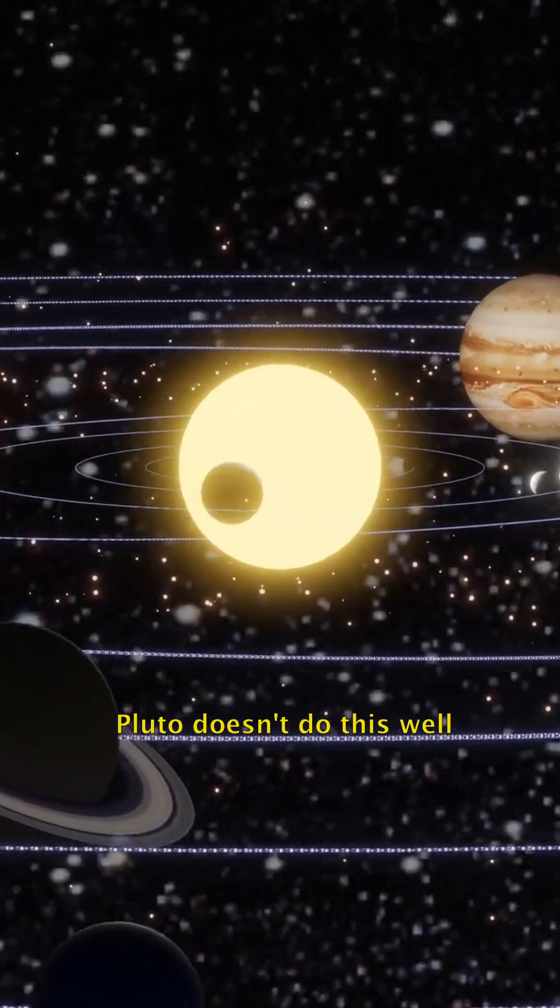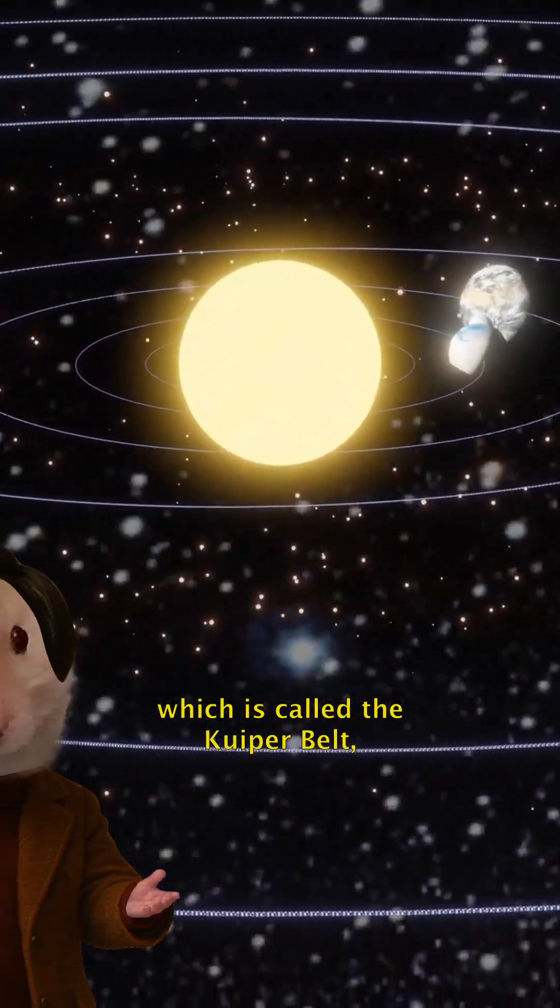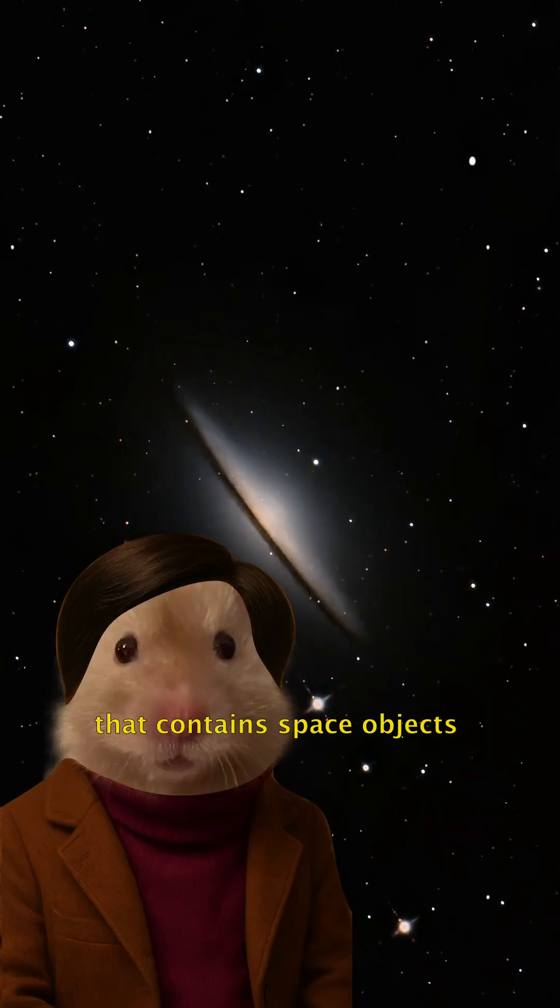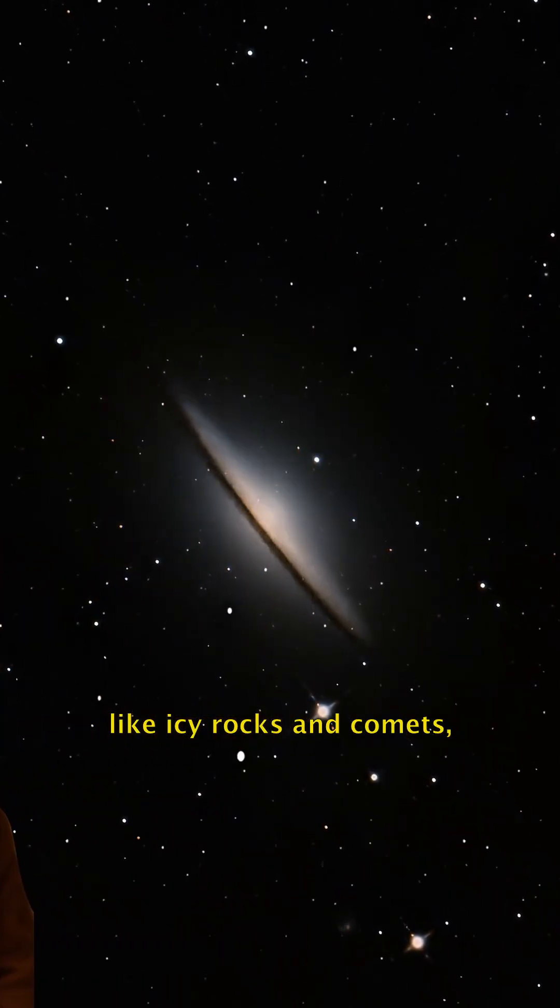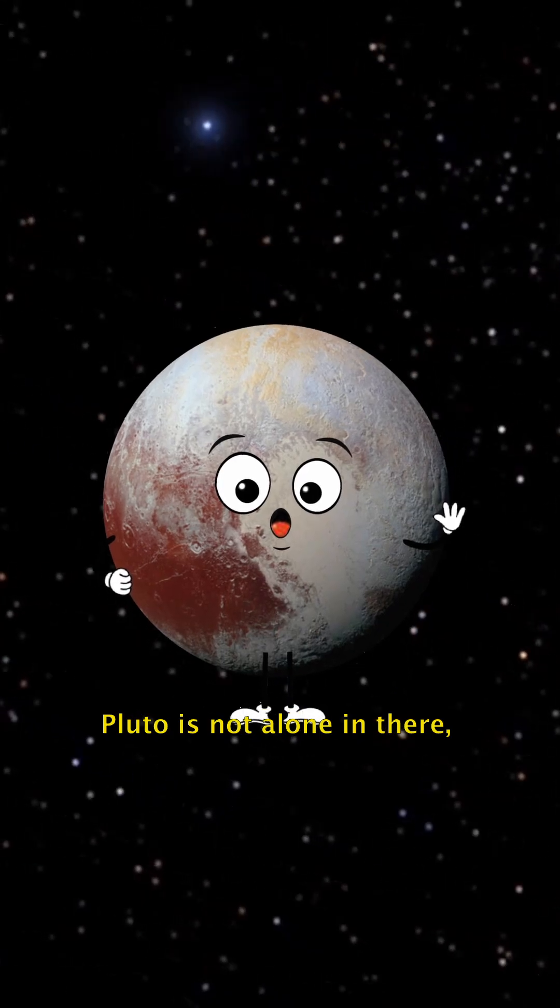Pluto doesn't do this well, because there are many other objects in its neighborhood, which is called the Kuiper Belt, a space similar to the asteroid belt that contains space objects like icy rocks and comets, and other dwarf planets. Because, yes, Pluto is not alone in there.